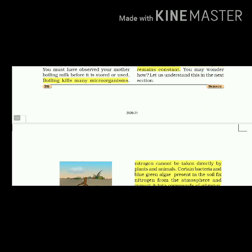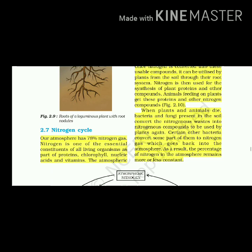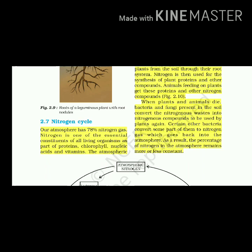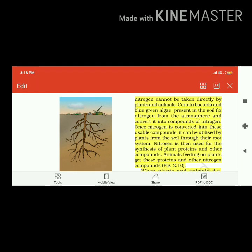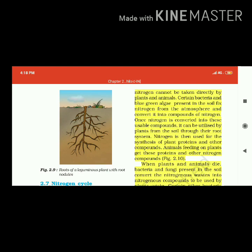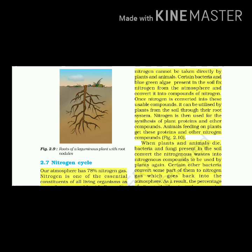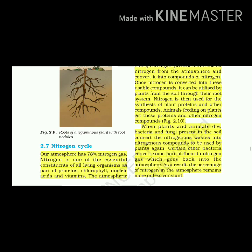Nitrogen cycle. Our atmosphere has 78% nitrogen gas. Nitrogen is one of the essential constituents of living organisms as part of proteins, chlorophyll, nucleic acids and vitamins. The atmospheric nitrogen cannot be taken directly by plants and animals. Certain bacteria and blue-green algae present in the soil fix nitrogen from the atmosphere and convert it into compounds of nitrogen. Once nitrogen is converted into these usable compounds, it can be utilized by plants from the soil through their root system. Nitrogen is then used for the synthesis of plants' proteins and other compounds.